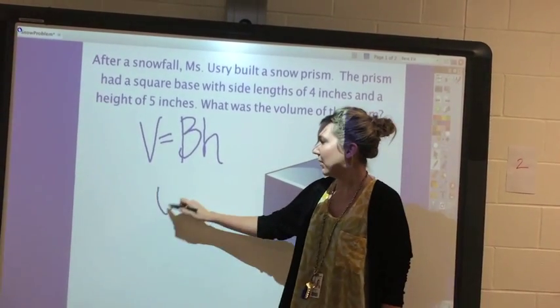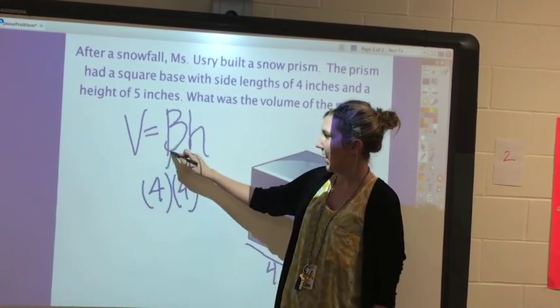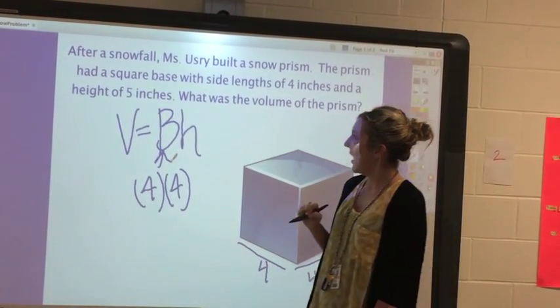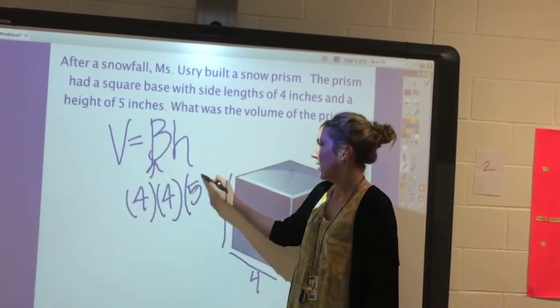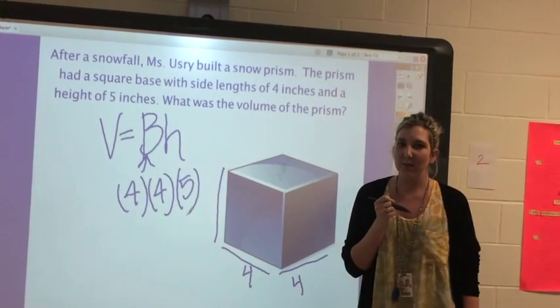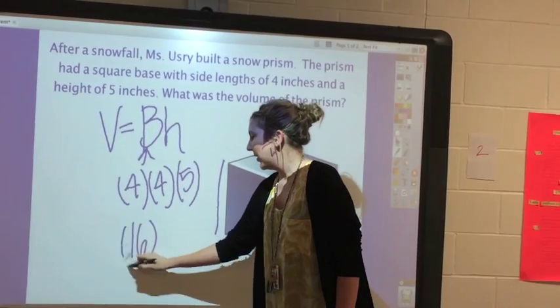So I'm going to multiply four times four for my big B, and then my height of five. That would be this right here. So four times four, what is four times four? Sixteen. And then we're going to multiply sixteen times five.